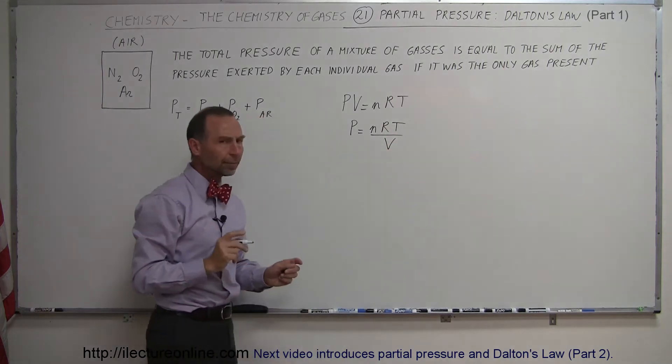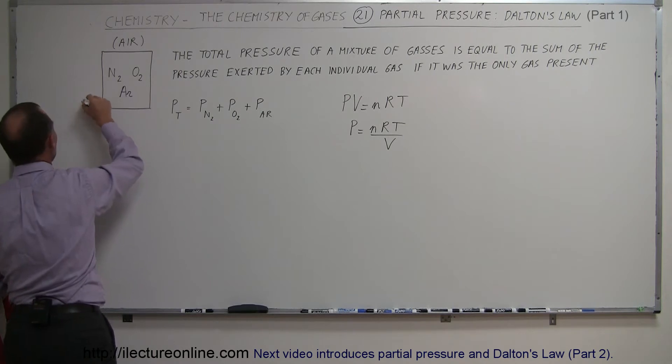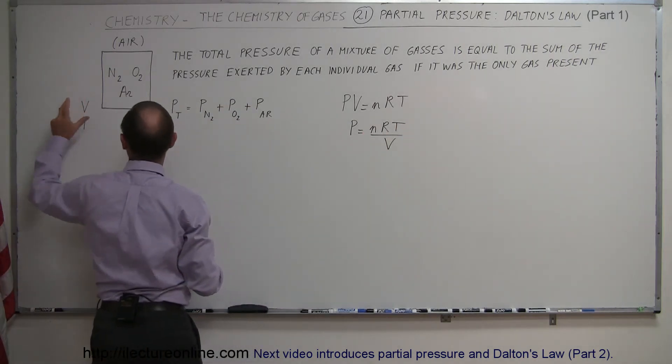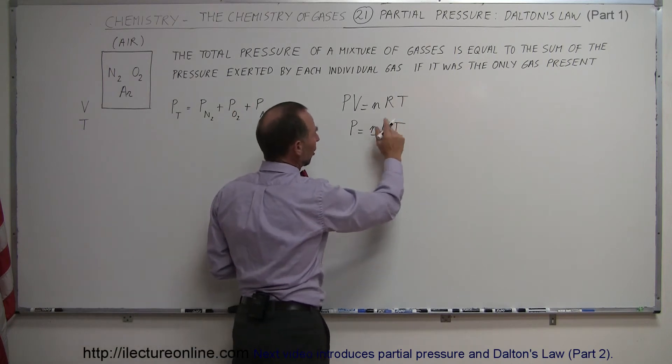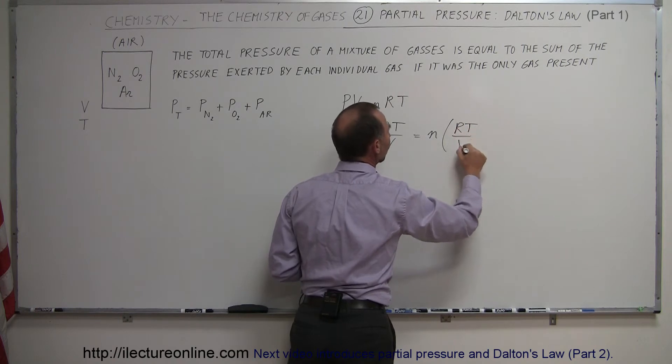Now notice, in a situation like this, where the container is fixed, it has a certain amount of volume, and the container is at a certain temperature. So we have volume and temperature, and of course R is a constant, we can write this as N times RT over V.